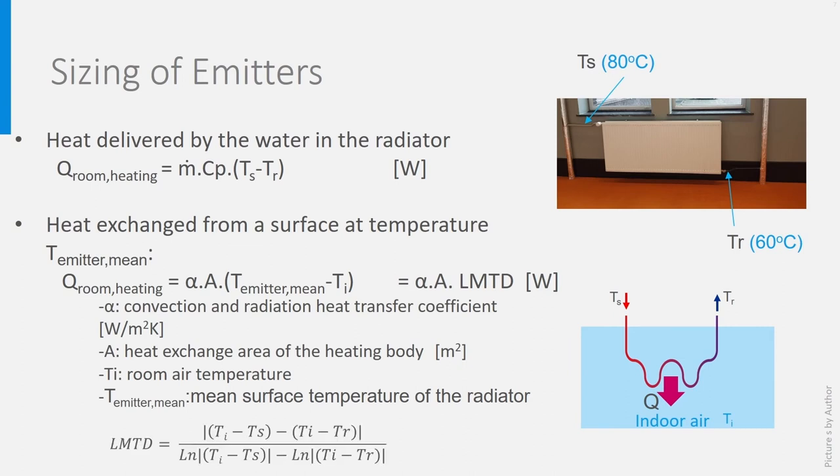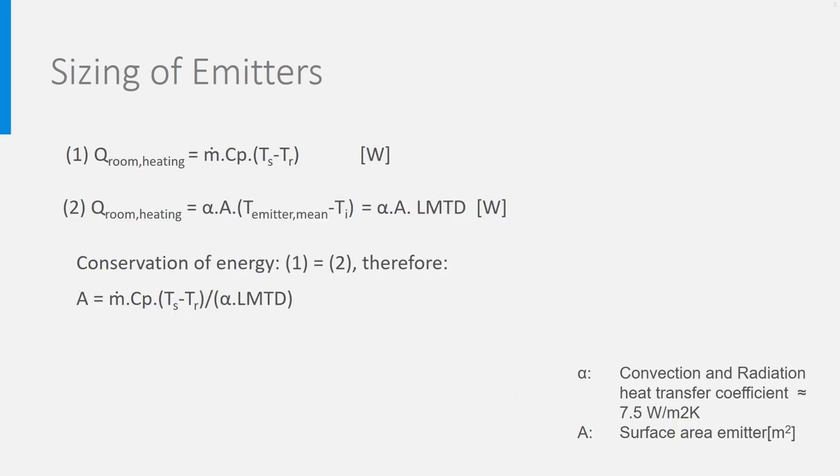Please also note that α is the convection and radiation coefficient, depending on air velocity and design of the radiator, and A is the area of the radiator. If you know the temperature levels T supply and T return and the quantity of heat to be exchanged, you can then relatively easily estimate the needed heat exchanger area by using the law of conservation of energy, by which the results of equation 1 should equal the results of equation 2.